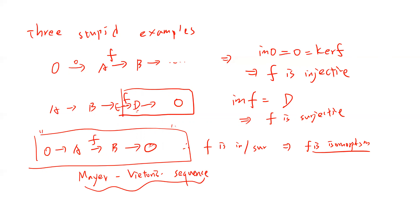By the way, this sequence — where a zero appears on the left — is called left exact, and where a zero appears on the right is called right exact. Usually this video should end here, but I want to prove two lemmas and then finish this video, and we will go to the short five lemma in the next video.